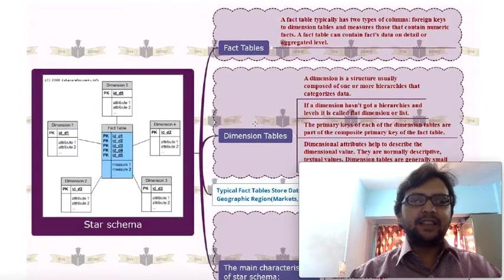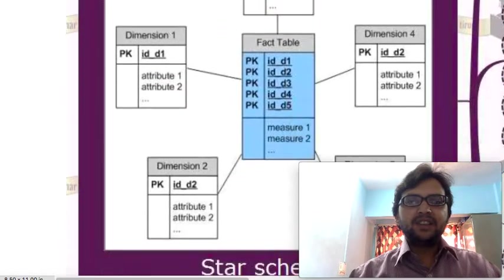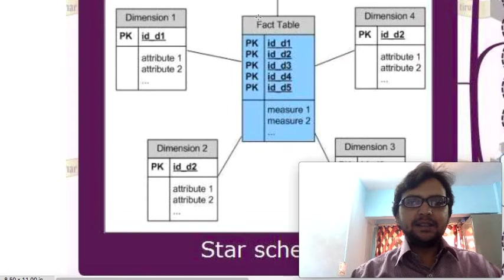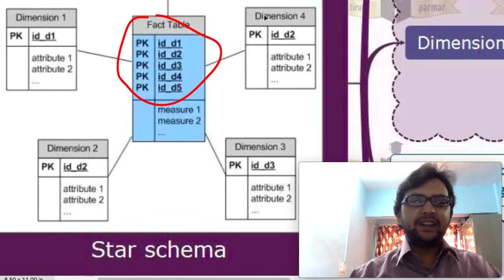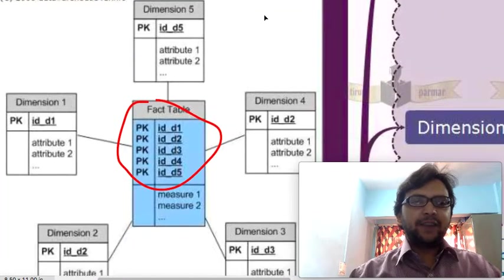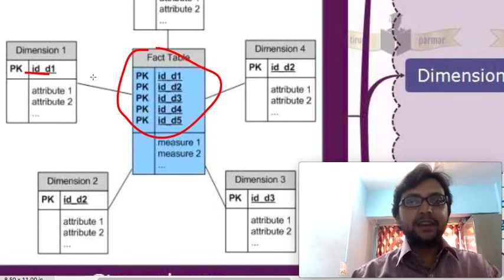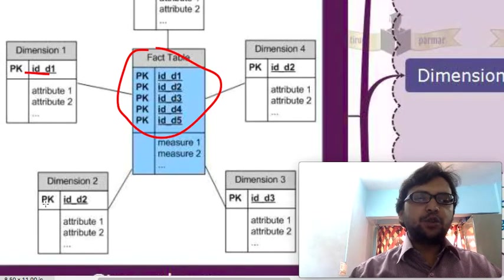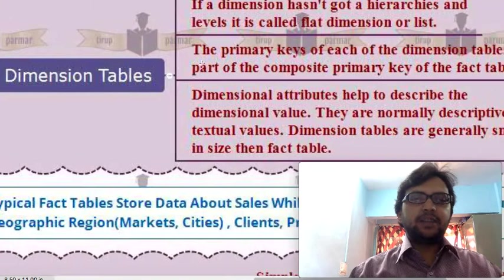Looking at the diagram: there is a central fact table — the primary table — linked to five different dimension tables. Each dimension table has a primary key that links to the fact table, similar to relational DBMS concepts we have studied previously. Each dimension is connected in the same manner: first, second, third, fourth, and fifth dimension.